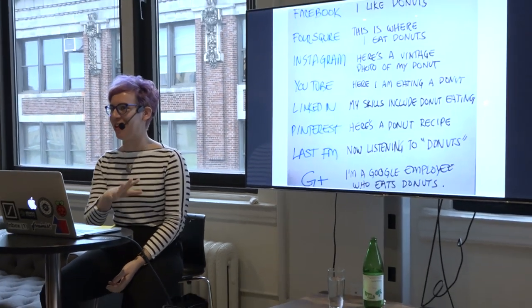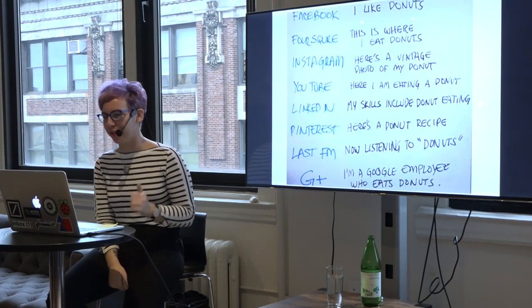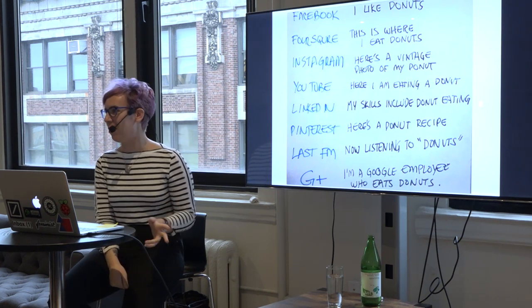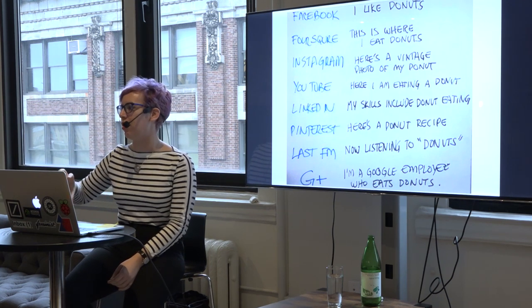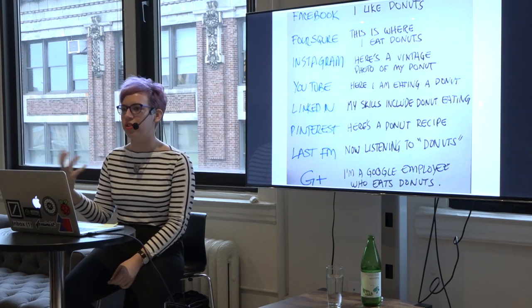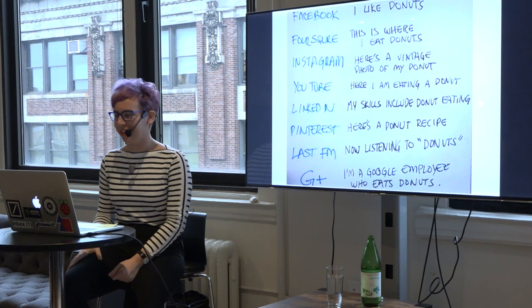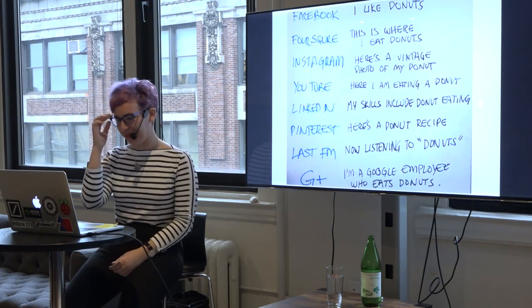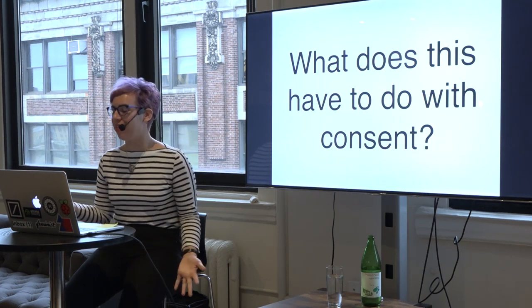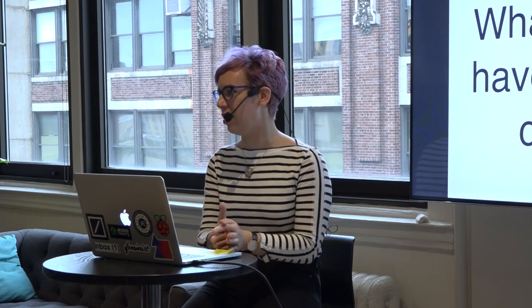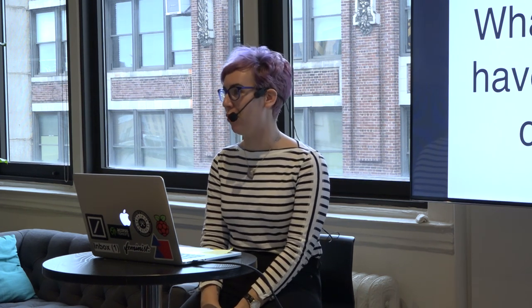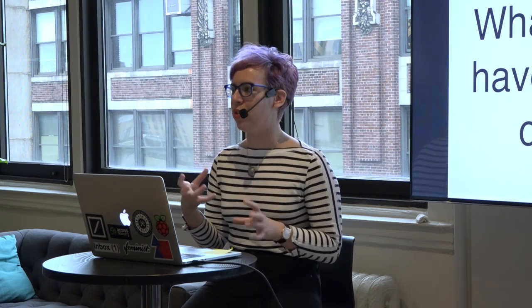Something I like to think about when approaching different kinds of social media: Facebook — I like donuts. Foursquare — this is where I eat donuts. Instagram — here's a vintage photo of it. While this is a joke, these are actually really on point in describing the different needs and wants from different kinds of social networks that facilitate and create different kinds of communities. That in turn engenders a specific kind of conversation and community. All these different platforms are creating new kinds of ways to converse with each other. But what I find most fascinating is the way that language is partitioned.